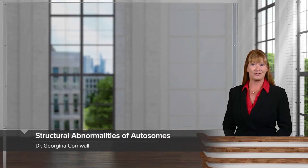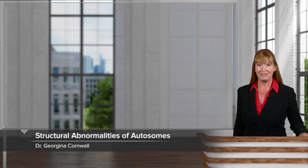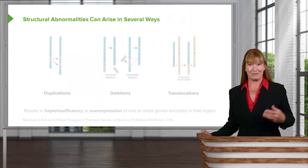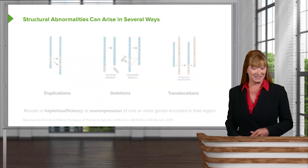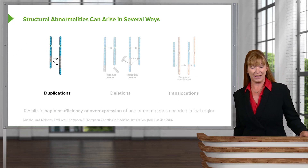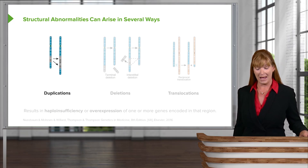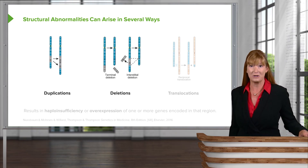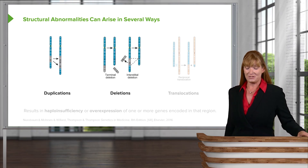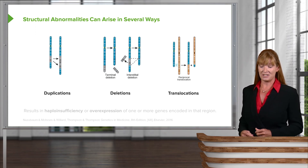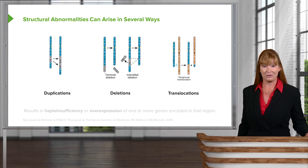In this lecture, we'll move on to look at structural abnormalities of the autosomes. Let's look at how some of those abnormalities happen. We should be pretty familiar with the fact that there could be duplications of regions of the chromosome as well as deletions of regions of the chromosome. We have also seen that this could happen through translocations — exchange of pieces between chromosomes.